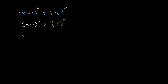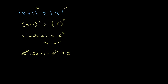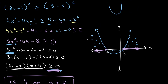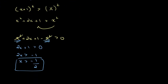Expanding gives x squared plus 2x plus 1 is greater than x squared. Bringing everything to one side: x squared plus 2x plus 1 minus x squared is greater than 0. The two x squared terms cancel, leaving 2x plus 1 is greater than 0, so 2x is greater than negative 1, and x is greater than negative one half. In this case we didn't have to solve a quadratic because the x squared terms cancelled out.